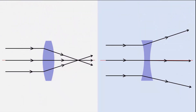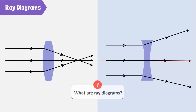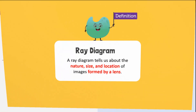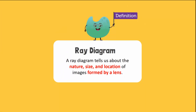Today, we are going to see how images are formed by lenses with the help of ray diagrams. A ray diagram tells us about the nature, size, and location of images formed by a lens.